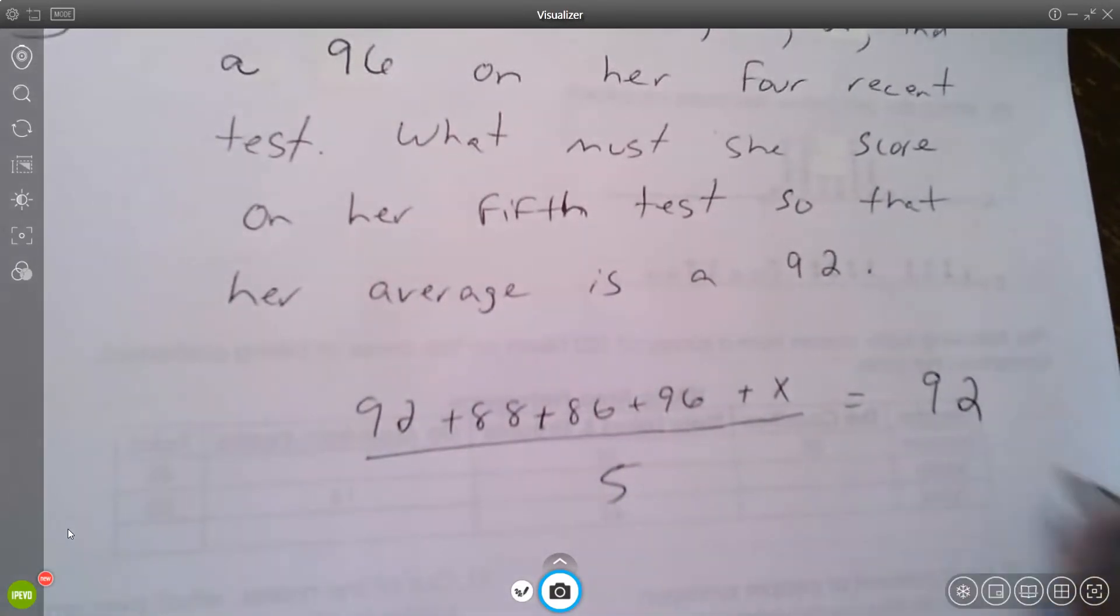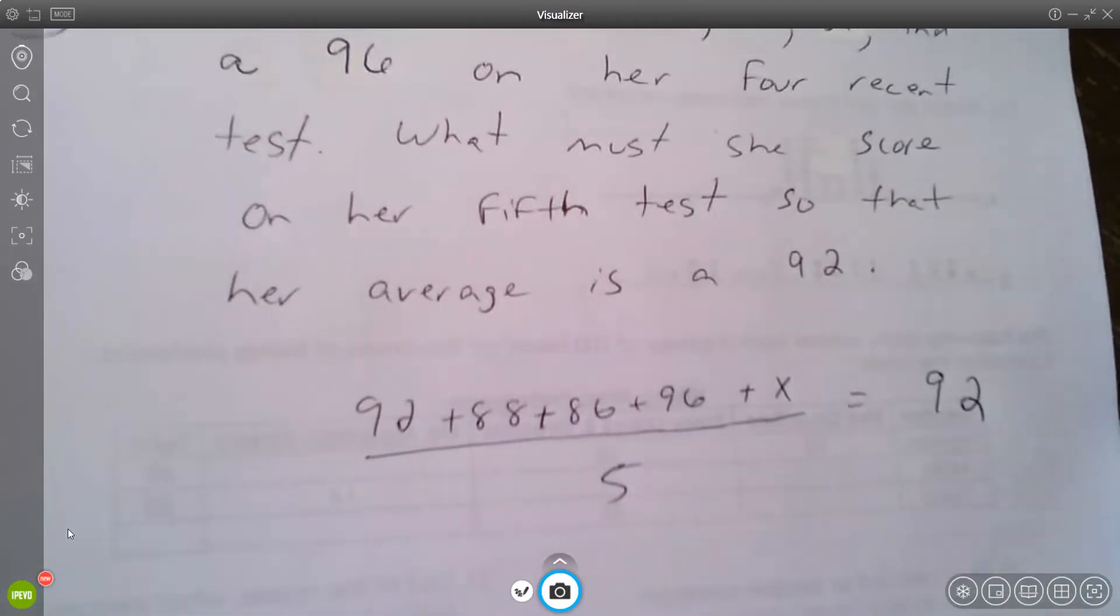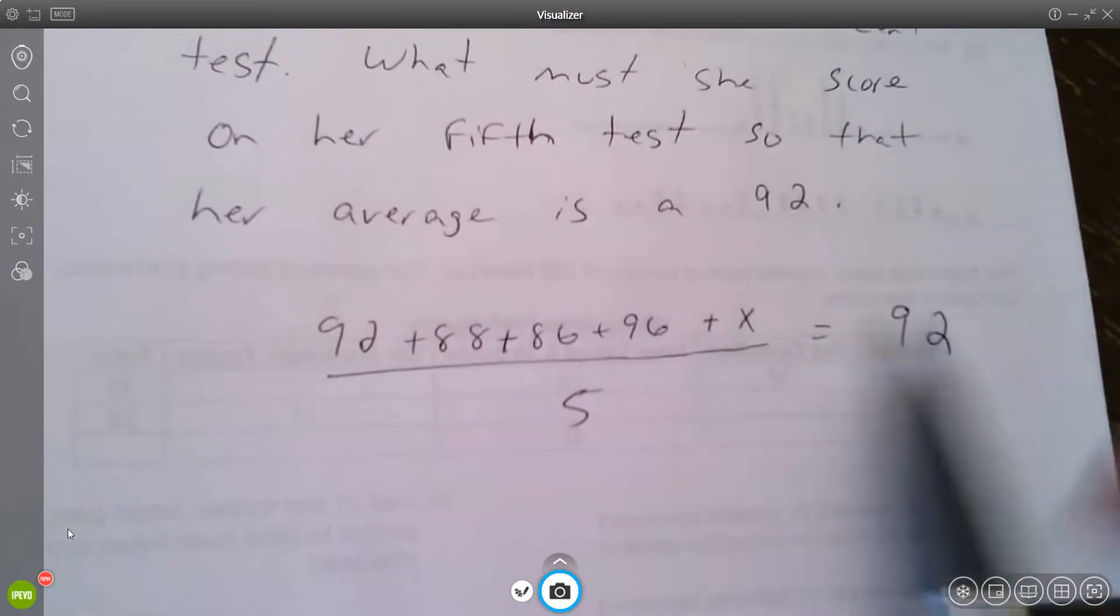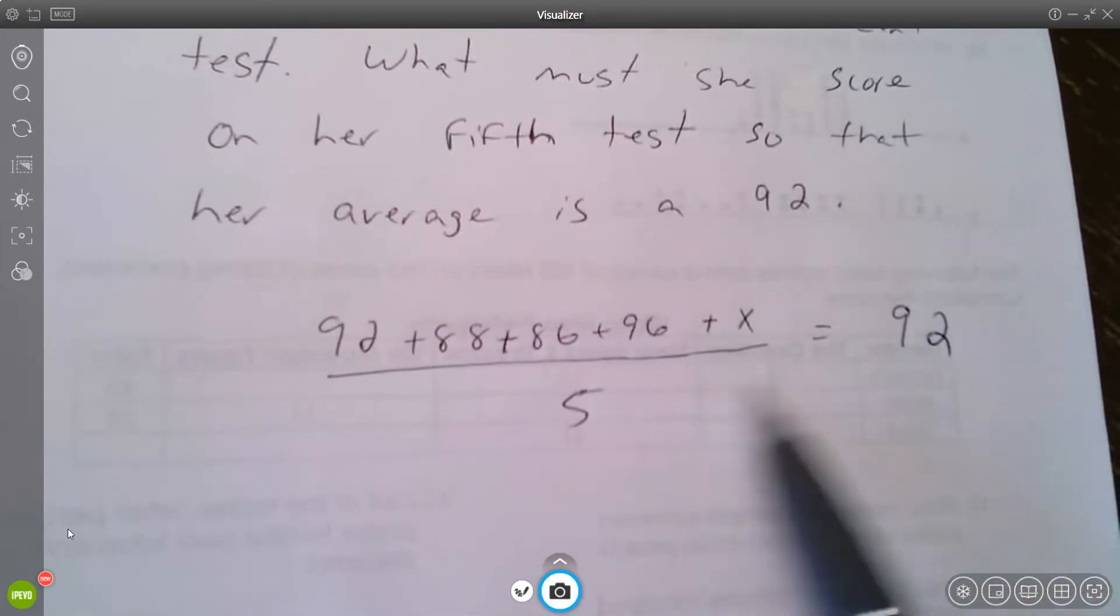To solve that equation, you could simply cross multiply as you multiply this side by five.